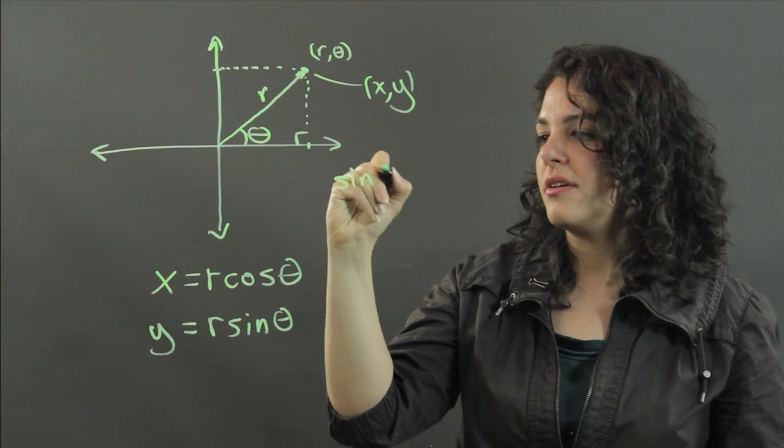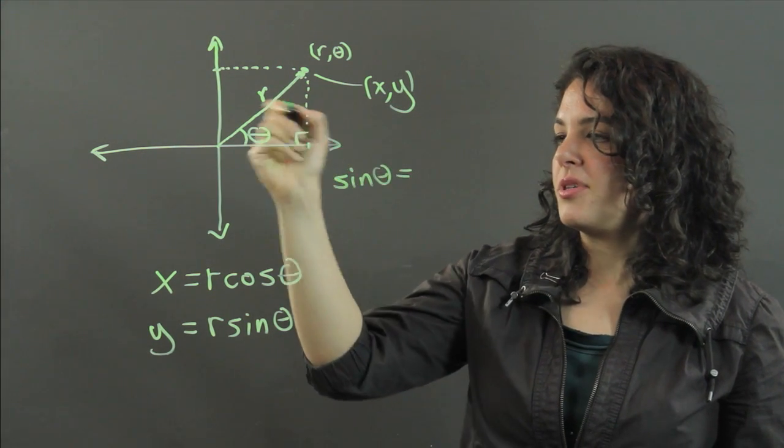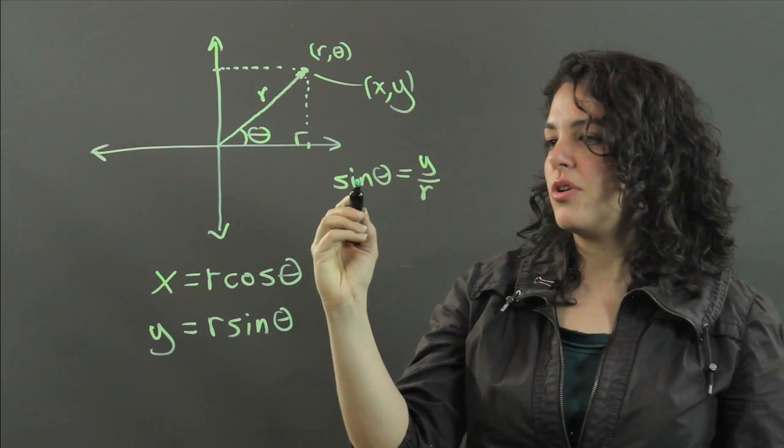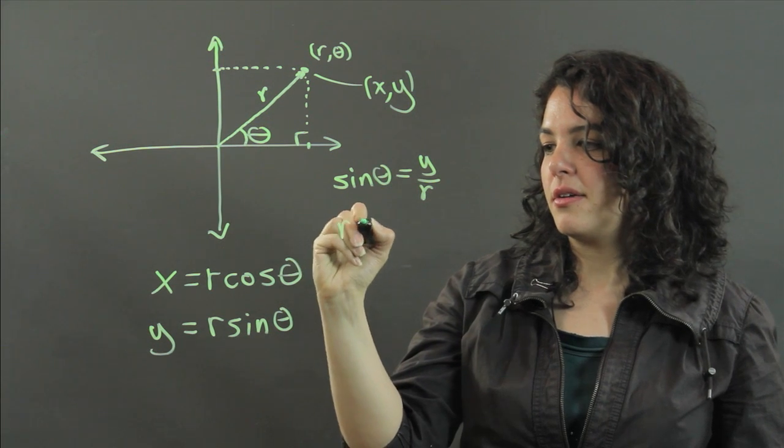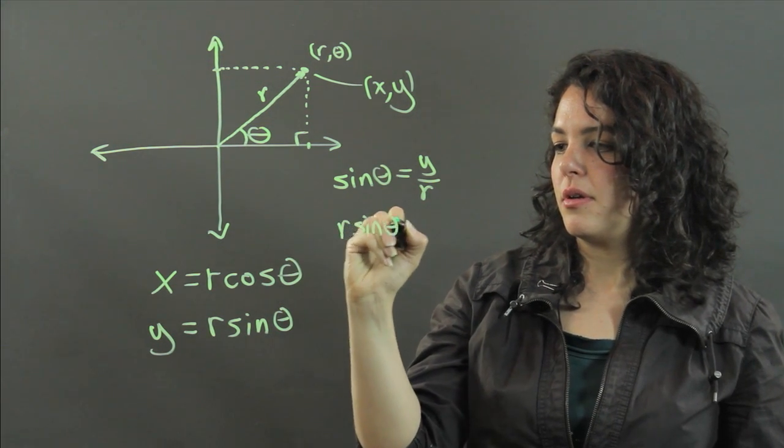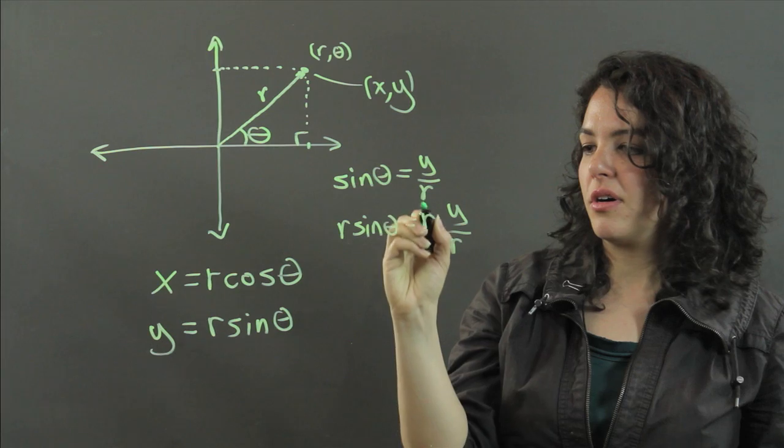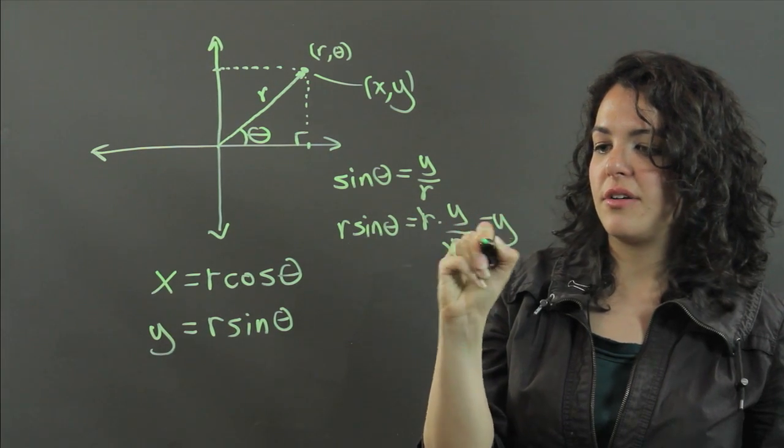So, sine of theta is opposite over hypotenuse, that's y over r. So, r sine theta would be r times y over r, and the r's cancel out, and I get y.